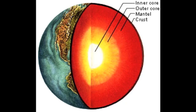The Earth is separated into different layers: the inner core, the outer core, the mantle, and the crust. But why is that? It has everything to do with the densities of the materials that make up each layer.